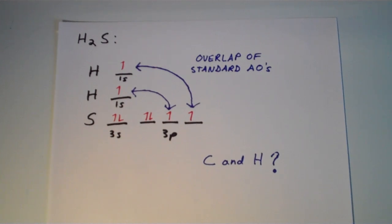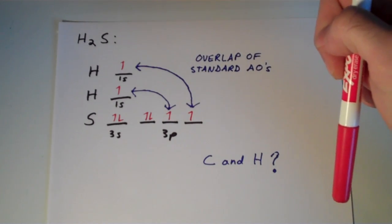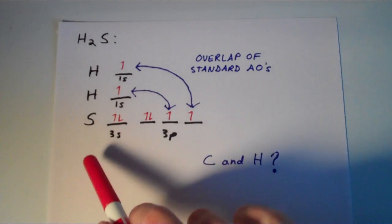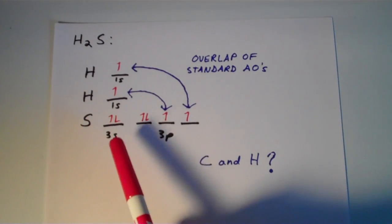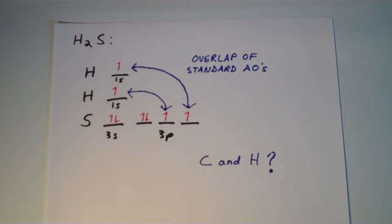So if we consider each hydrogen sulfur bond as an overlap between a 1S and a 3P, then we would end up with a molecule in which the bond angle between the two hydrogens is about 90 degrees, the distance between two P orbitals. So we'd have two hydrogens 90 degrees apart, and we'd have a lone pair sitting in a 3P orbital and a lone pair sitting in a 3S orbital on sulfur.